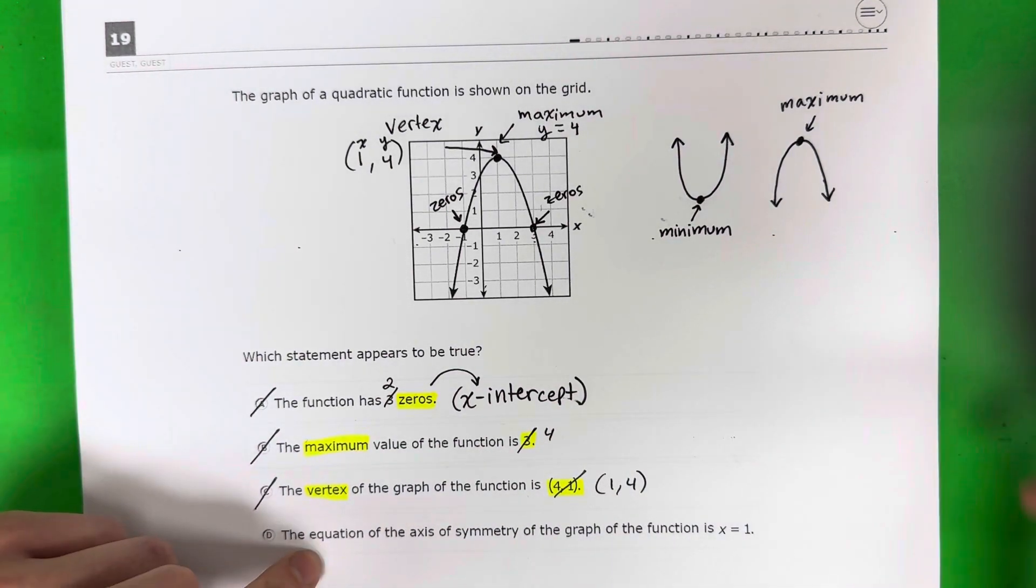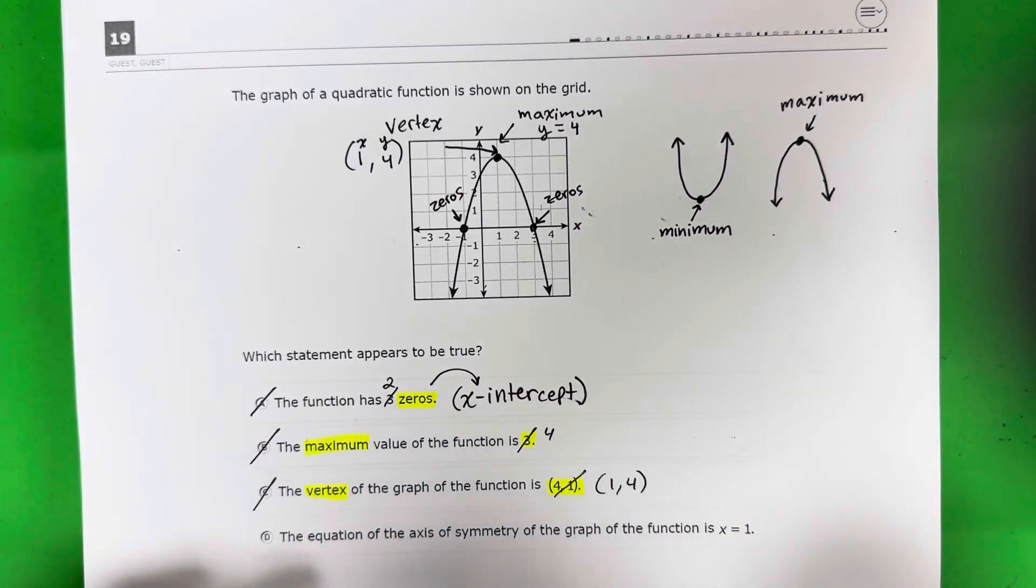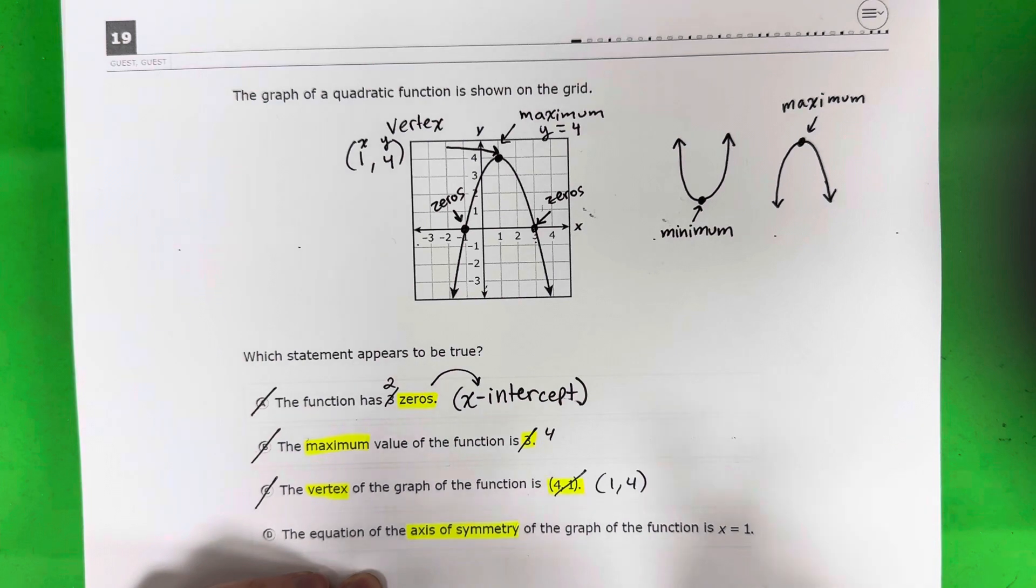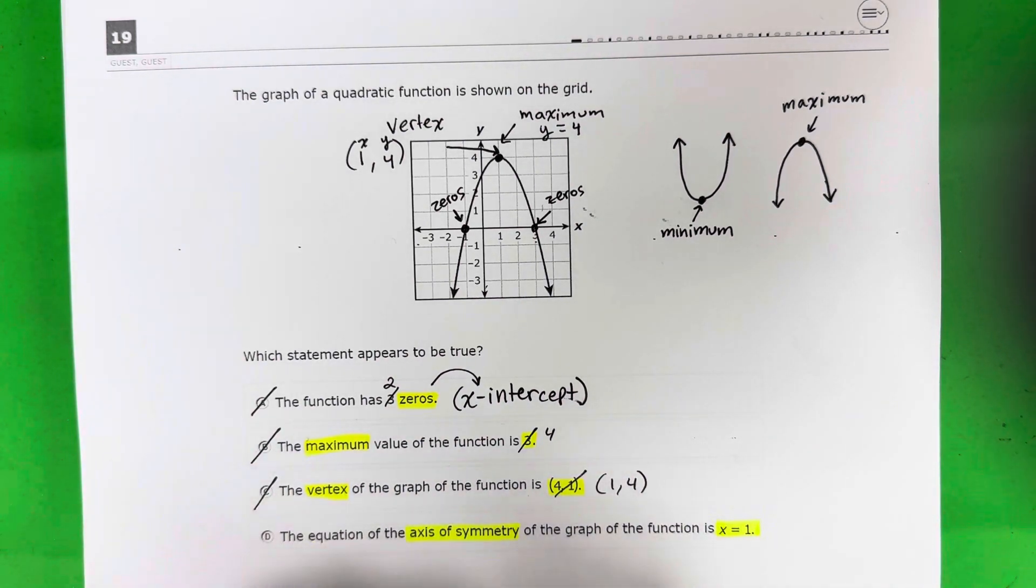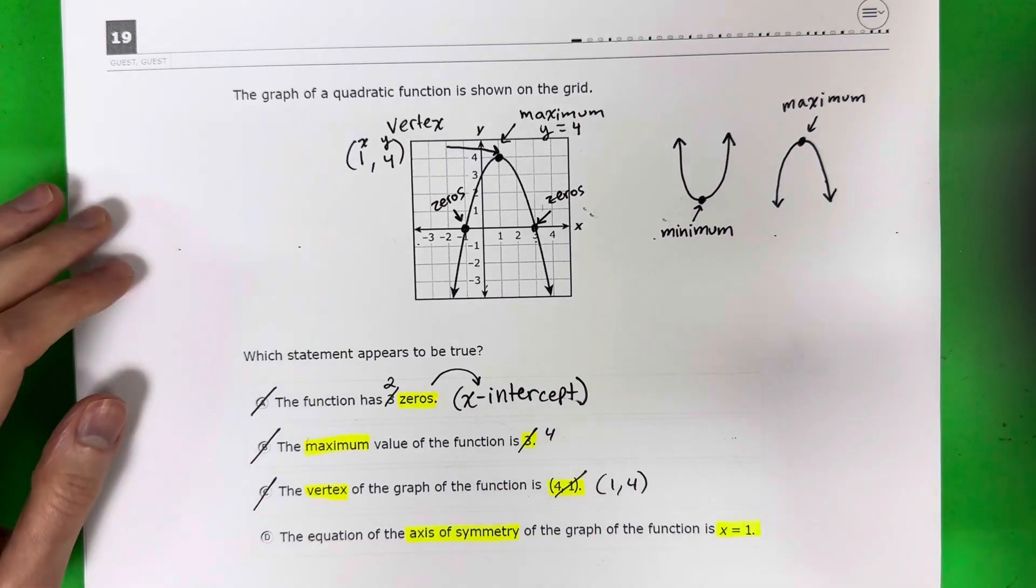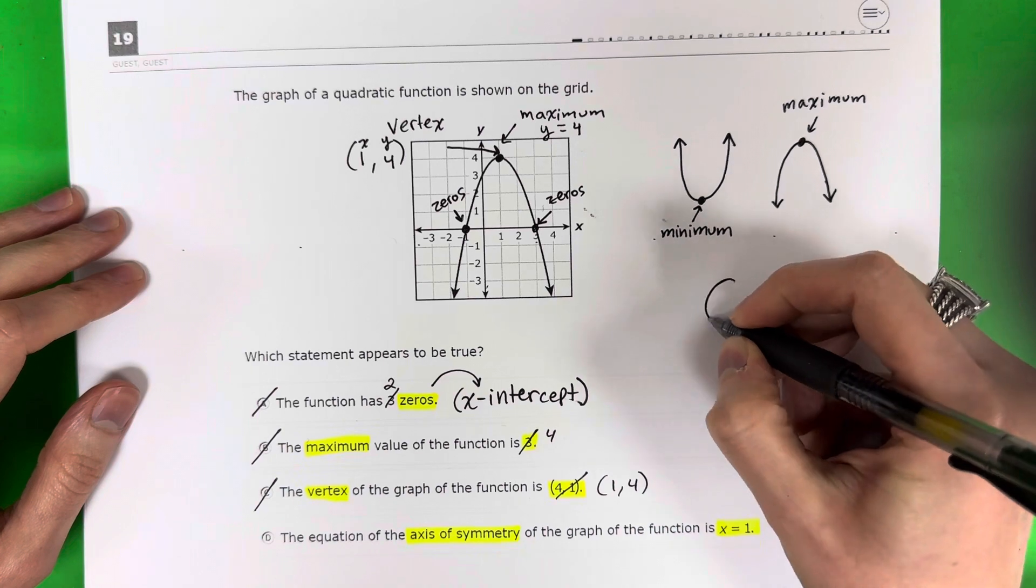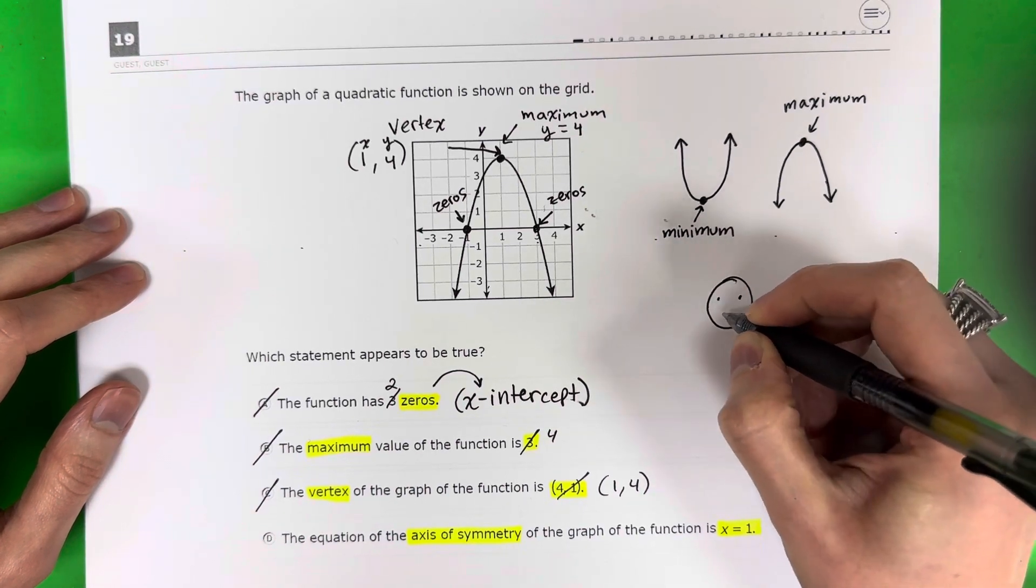Okay, and then the last one, which is probably correct. The equation of the axis of symmetry of the graph of the function is x equals 1. So axis of symmetry. So what is axis of symmetry? If you have a shape, so for example, your face, right?